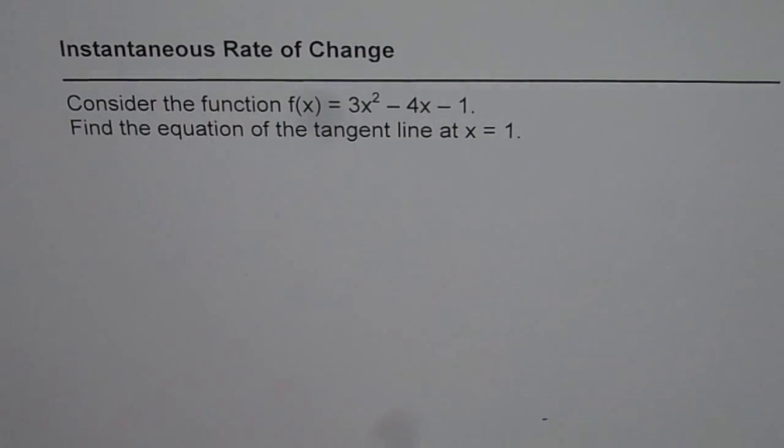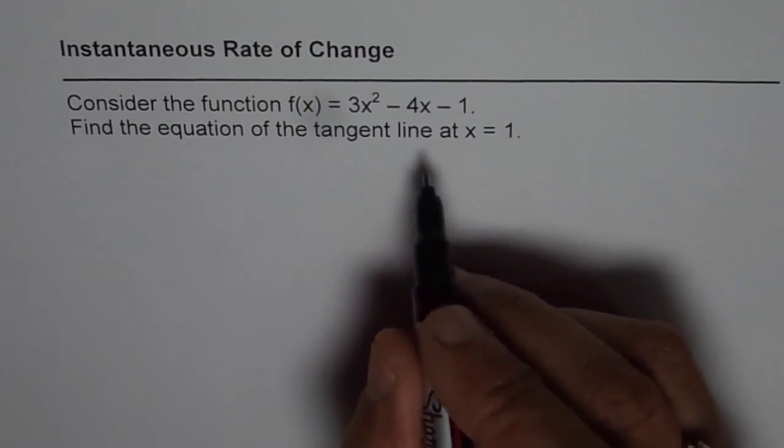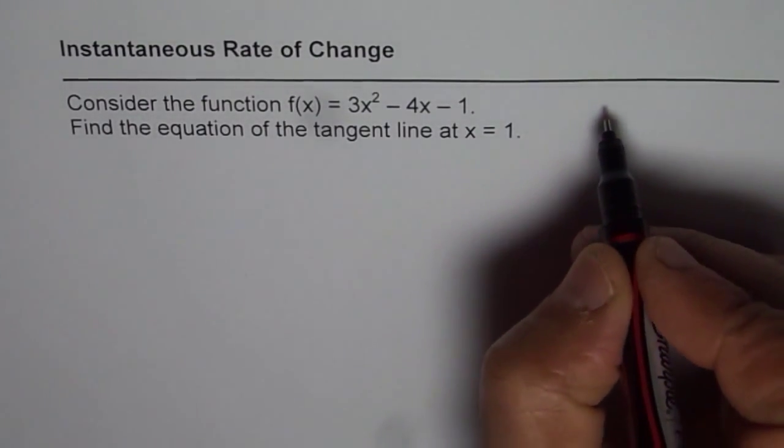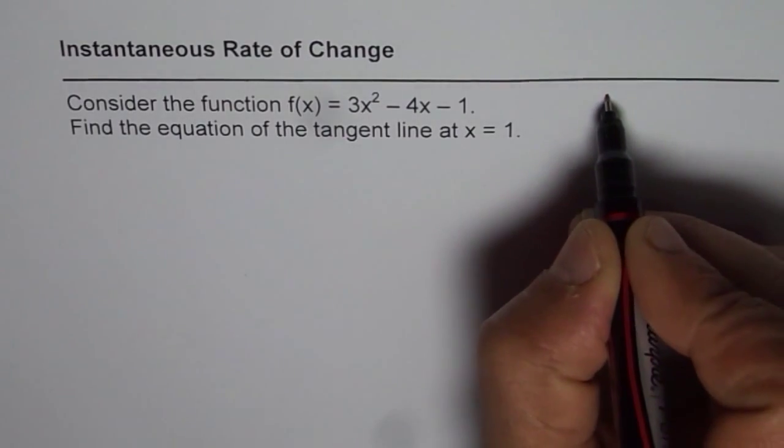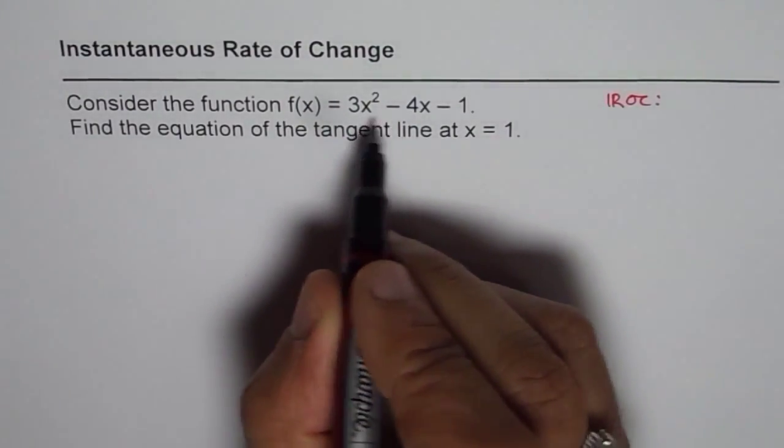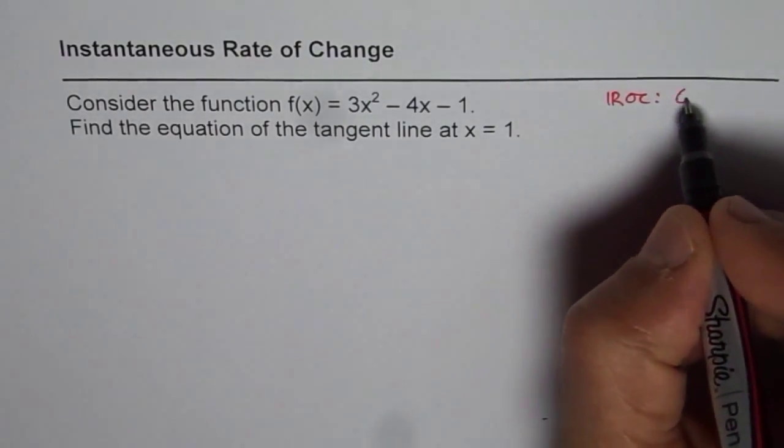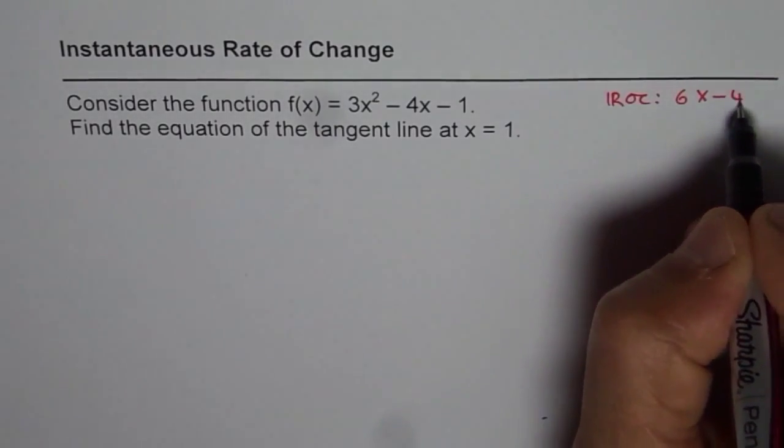A question like this is always expected in this test. We will go in for difference quotient method and find the solution, but here is a quick check for it. As we learn, instantaneous rate of change for a polynomial function like this will be 2 times 3 which is 6x - 4.